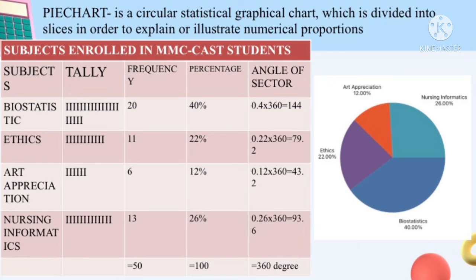For example, out of 50 students, there is a portion where students enrolled in each subject. We need to get the angle of sector. To get the percentage we multiply by 100, but for the angle of sector we multiply by 360 degrees, since a pie chart is a full circle of 360 degrees. To solve: 20 divided by 50 equals 0.4, times 360 equals 144 degrees. Next, 0.22 times 360 equals 79.2 degrees. Then 0.26 times 360 equals 93.6 degrees.